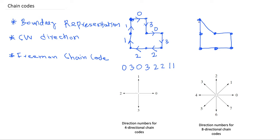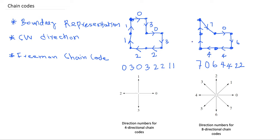Now we will code this particular boundary using eight-directional chain code. Starting from the chosen point, the first segment is represented by number seven. Then we have a segment going to the right side, coded with number zero. Then one going down, coded with number six. Then two different lines going to the left side, coded with number four. Then two segments going up, coded with number two. So the Freeman chain code for the second boundary is: 7, 0, 6, 4, 4, 2, 2.